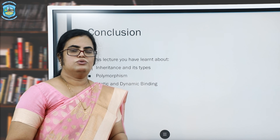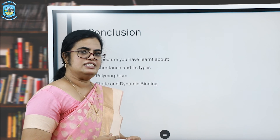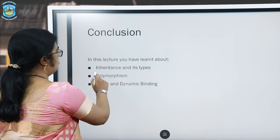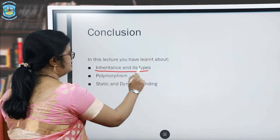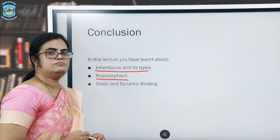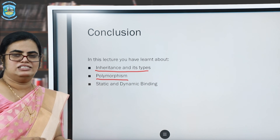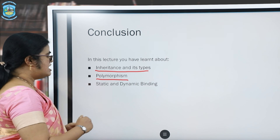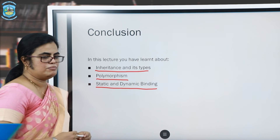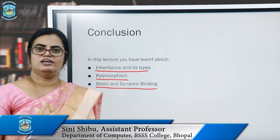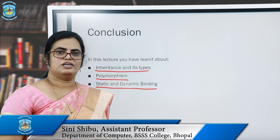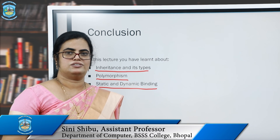So let me conclude all that we have learned in this lecture. We have learned about inheritance and its various types. We have learned how polymorphism is implemented in C++, and we have also seen static and dynamic binding. I hope you have understood these basic concepts of C++ programming. Thank you very much.